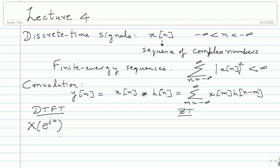By denoting it like this, I am reminding myself every time that my function has to be periodic with period 2 pi. So typically people worry about only a 2 pi interval in omega — either 0 to 2 pi or minus pi to pi. The DTFT is defined as the sum over all n of x(n) e power minus j n omega. It is a series summation, nothing more than that.